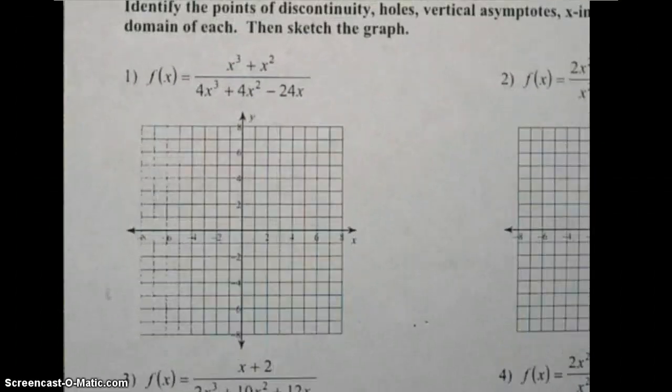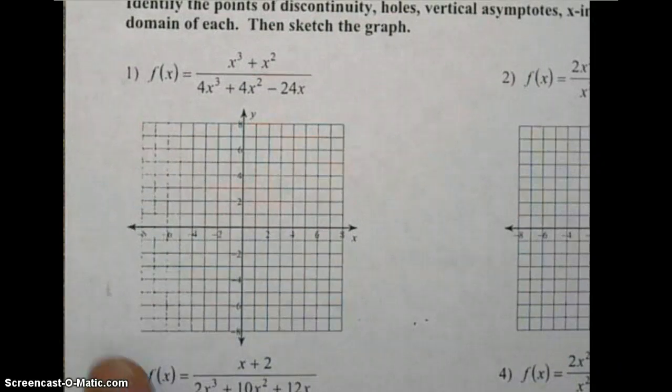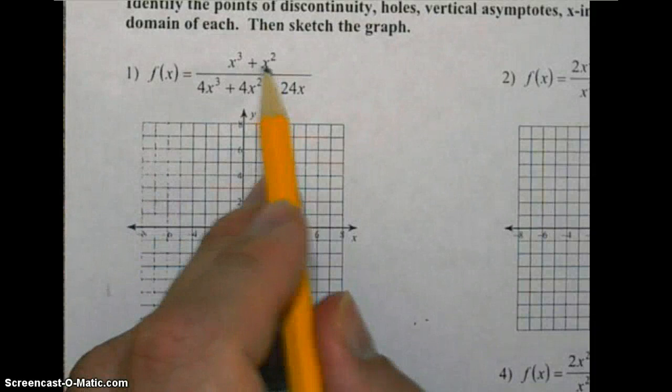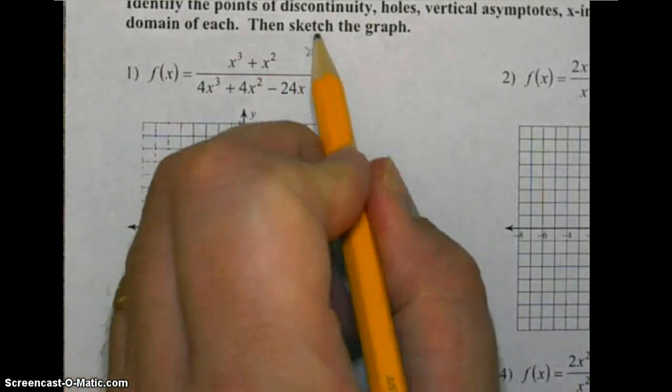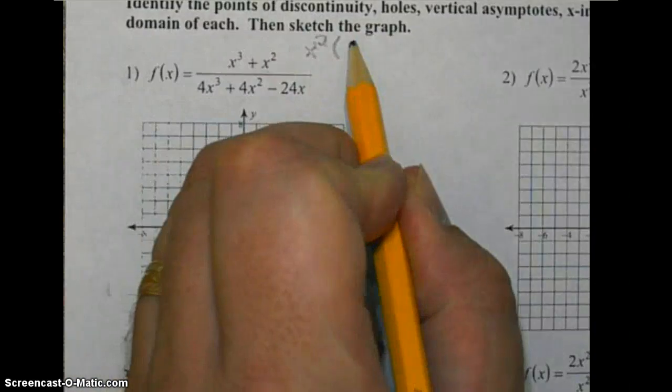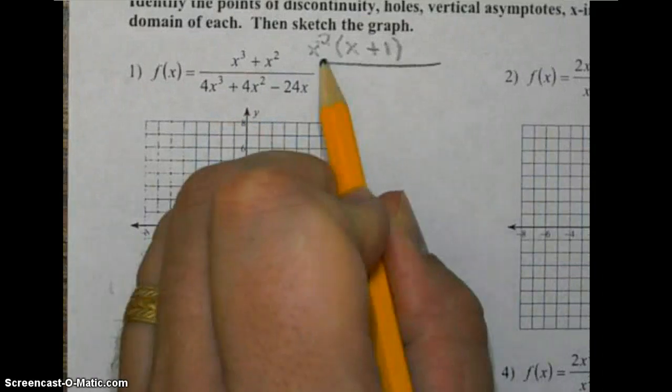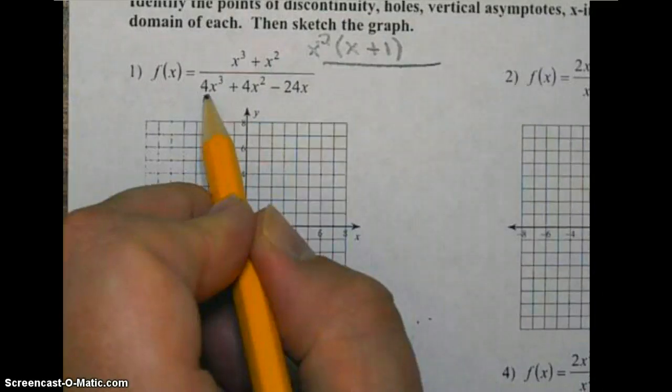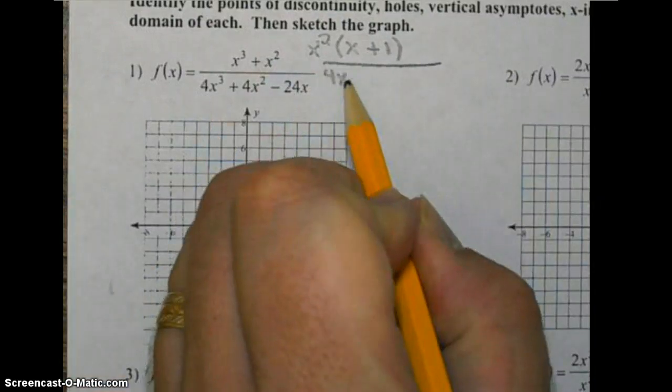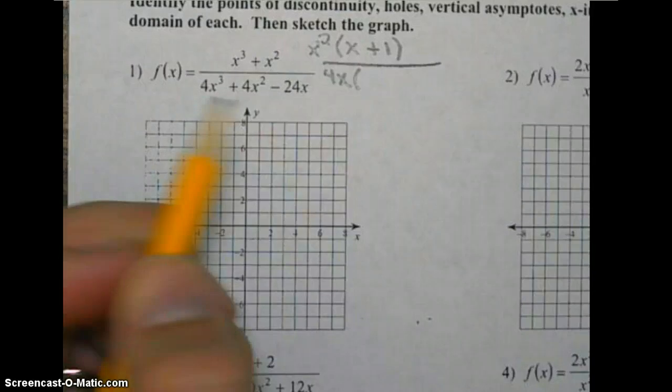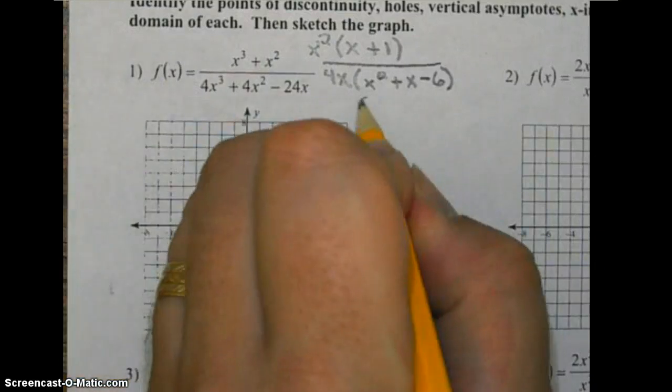Number one, characteristics of rational expressions on graphs. First thing we want to do here is factor out an x squared out of each term, so we get x squared times (x + 1) over, factoring out a 4x out of each term, we get 4x times (x squared + x - 6).